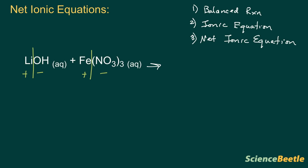We also need to identify the charges. If you look on your periodic table of ions, you'll notice that lithium, because it's in group one, is going to have a plus one charge, and hydroxide is a minus one charge. Moving on to the next compound — if we don't know the charge of iron, we can look here. Notice there are three copies of the nitrate. We already know nitrate has a minus one charge and we've got three of them, so the total charge for the nitrates is minus three.